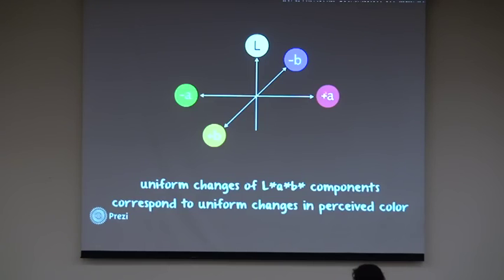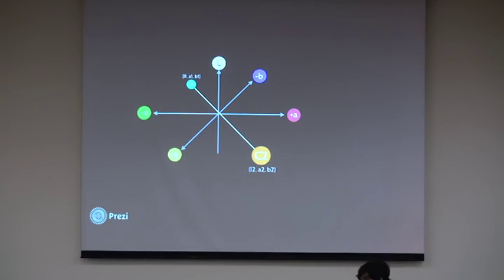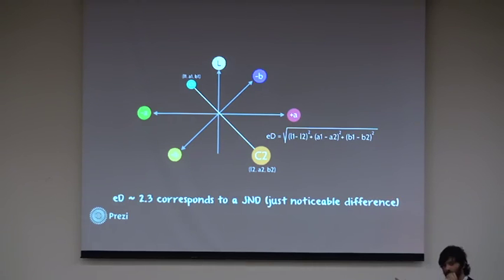In this space, a change in the colors, as I said before, tries to represent the same change for the human vision. Given two colors, we can now use the Euclidean distance as we did before in RGB. The thing is that there is now a minimum distance to consider two colors different. Below that distance, the colors are indistinguishable for the human in average sight.